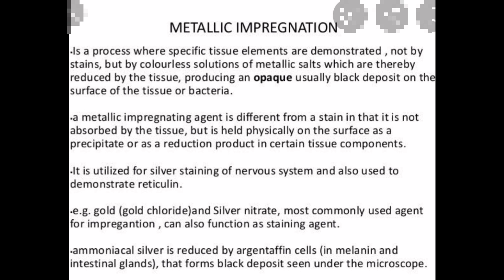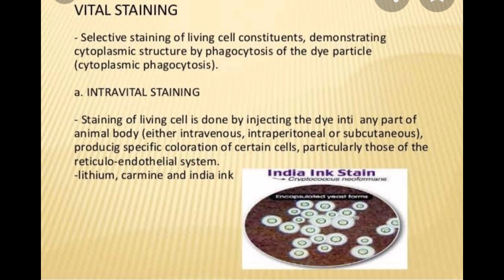The use of metallic instruments should be avoided when handling sections for metallic impregnation. Vital staining is the selective staining of living cell constituents that can demonstrate cytoplasmic structures by phagocytosis and the reticuloendothelial system, including staining of pre-existing cellular components and even mitochondria. The nucleus of a living cell is resistant to vital stains and cannot be demonstrated; demonstration of nuclear structures during vital staining suggests permeability of the membrane to the dye, signifying the death of the cell.